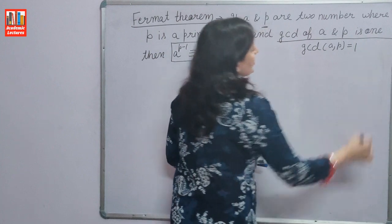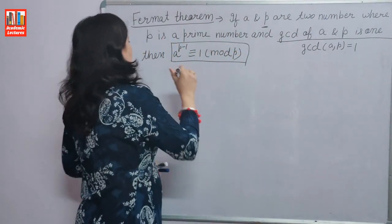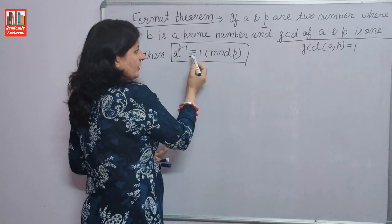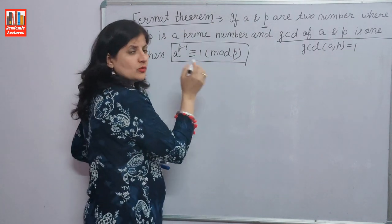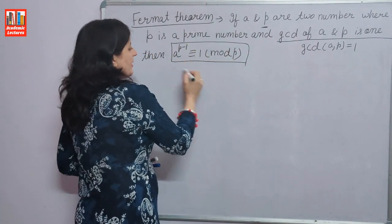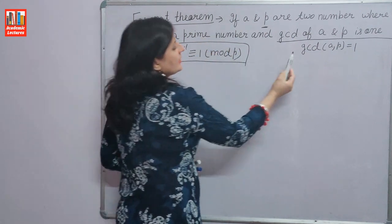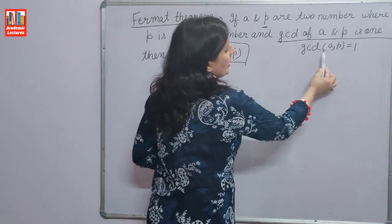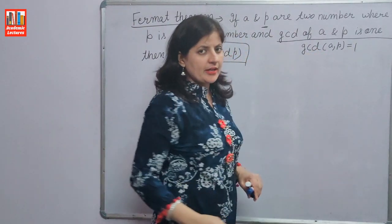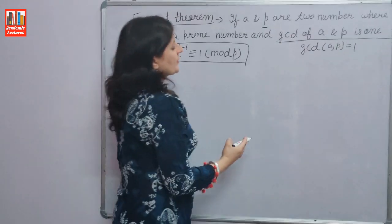GCD of A and P is equal to 1. Then A raised to the power P minus 1 is congruent to 1 modulo P. This result will be satisfied when GCD of A and P is equal to 1 and P is a prime number. Let's solve some questions.